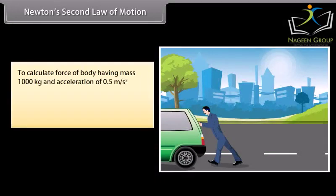To calculate force of body having mass 1,000 kg and acceleration of 0.5 meter per second square, then F is equal to 1000 into 0.5, which is equal to 500 Newton or kilogram meter per second square.